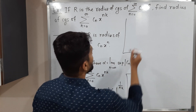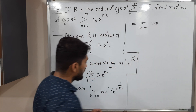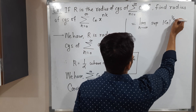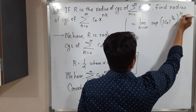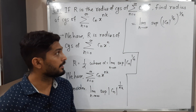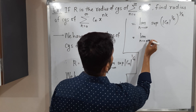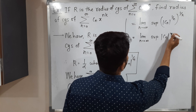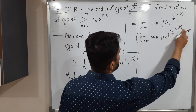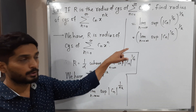This equals limit n tends to infinity, supremum of mod cₙ raised to 1 by n. We can rewrite this as mod cₙ raised to 1 by n, whole raised to 1 by k, since 1 by k times 1 by n gives 1 by nk — the same thing written differently. Since k is independent of n, we can write it as limit n tends to infinity, supremum of mod cₙ raised to 1 by n, whole raised to 1 by k.